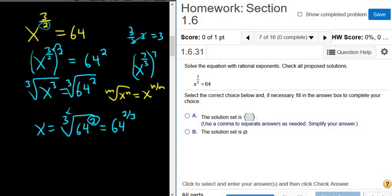So now what you can do is you can put the 3 here, put the 64 here, and it doesn't matter where you put the 2. You can put the 2 on the outside or the inside. It doesn't matter. And the cube root of 64 is 4. And so you get 4 squared, which is 16.